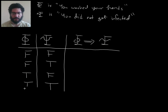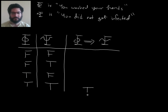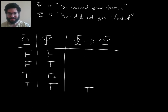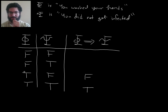Let's try the bottom row — maybe the easiest one. Suppose phi and psi are both true: you did wash your hands and you did not get infected. Then what would you say about someone who says 'if you washed your hands, you did not get infected'? I think everyone would say yes, they're telling the truth. What about the row where you washed your hands but you got infected anyway? They have told a lie — they said if you washed your hands you did not get infected, but you did get infected, making them a liar.